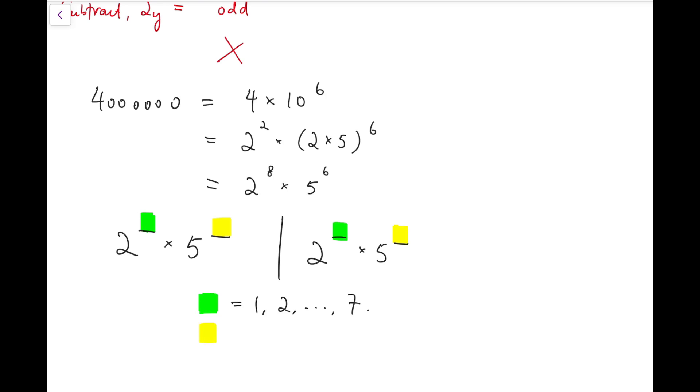So there are 7 options for the green blank, while for the yellow blank, there are actually no restrictions except that, of course, it cannot be larger than 6. So 0, 1, all the way up to 6.